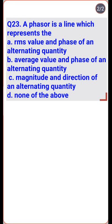A phasor is a line which represents the RMS value and phase of an alternating quantity — so option A is the right one.